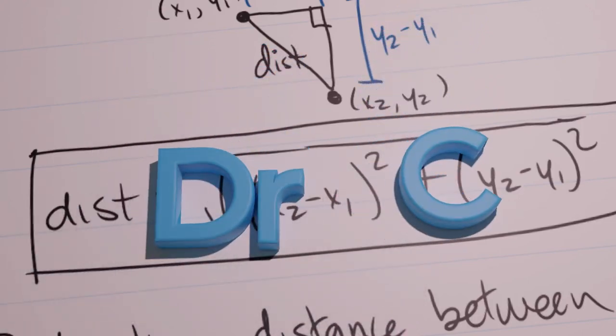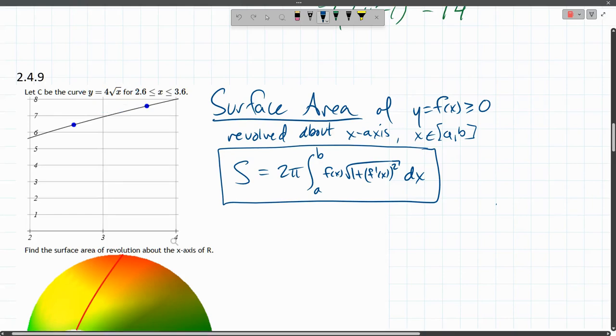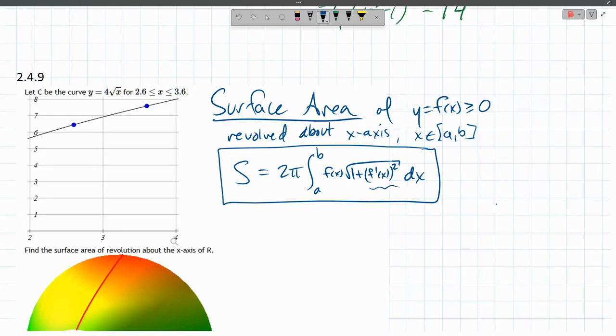We're trying to find the surface area of this curve for square root x. And we have our surface area formula. There's a few things we need to get. We need to take the derivative of that, then square it, then add one, then take square root.